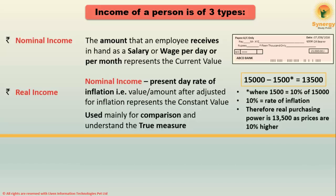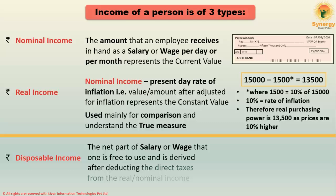Therefore, your real purchasing power is 13,500, as prices are 10% higher. Then there is another concept: disposable income. Disposable income is the net part of salary or wage that one is free to use, and is derived after deducting direct taxes from the real or nominal income.